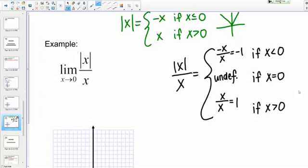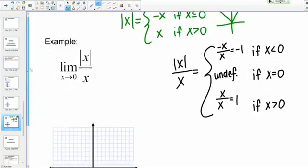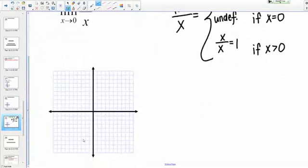I see my three pieces here. The function is negative 1, then it's undefined, and then it's positive 1. Let me quickly sketch what that would look like on a graph.